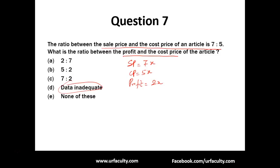What you have to do is find out profit to cost price. We know that profit equals 2x and cost price equals 5x, so the ratio is 2:5. The answer in this case is 2:5, and hence it is 'none of these'.